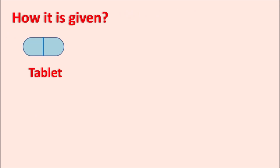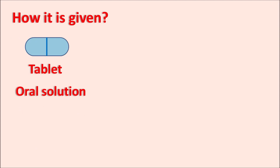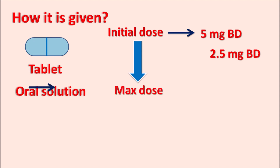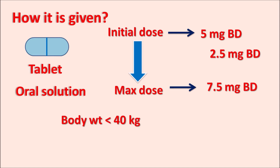This drug is available as a tablet as well as oral solution. The initial dose is 5 mg twice daily, but can be reduced to 2.5 mg based on the patient's condition. The dose can be increased based on heart rate control. The maximum dose is 7.5 mg given twice daily.